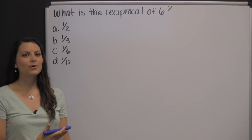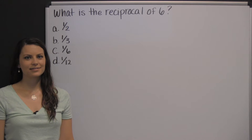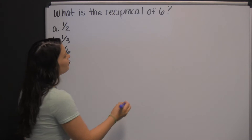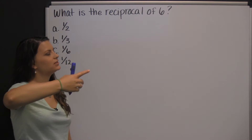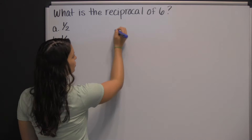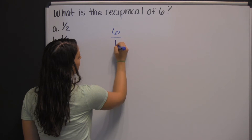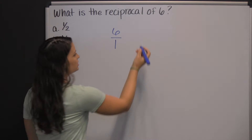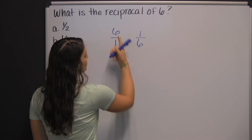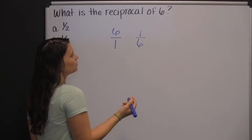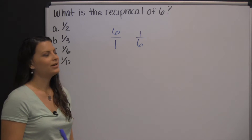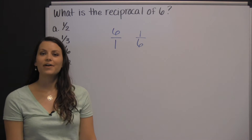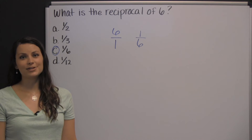One of those math skills would be finding the reciprocal of a number. Here we have an example where we're going to find the reciprocal of 6. First, we need to know what the word reciprocal means. Reciprocal just means the inverse of a number, or the flip of a number. So, 6 can also be written as 6 divided by 1. The reciprocal would just be the flip of that, or 1 over 6. So, 6 over 1 and 1/6 are reciprocals of each other. Therefore, the reciprocal of 6 is 1/6. There's one example of how to find the reciprocal of a number, which you might need to know when you take the HESI.